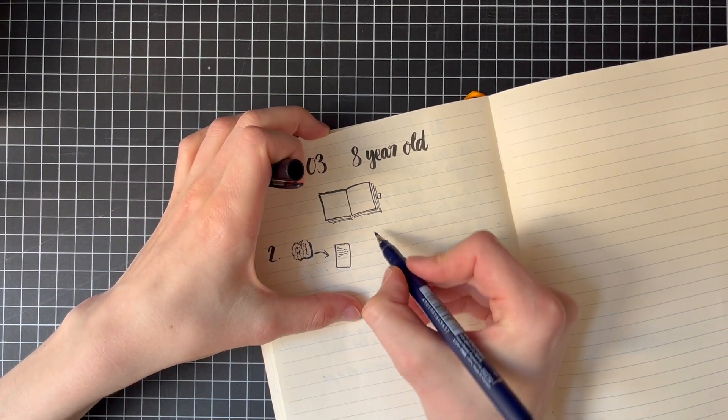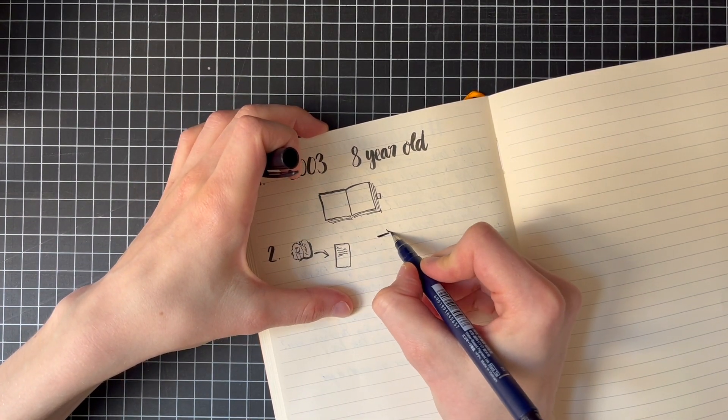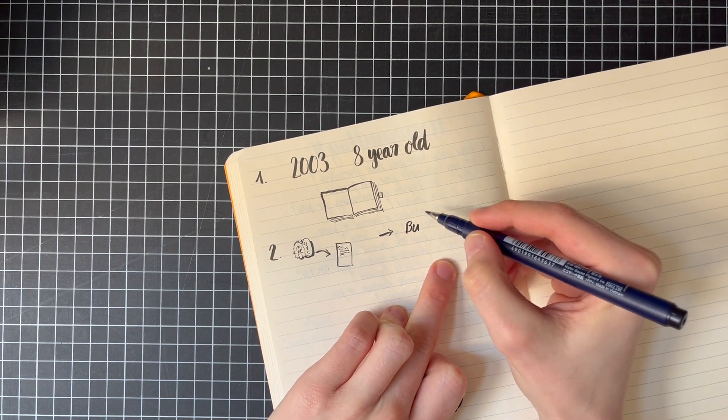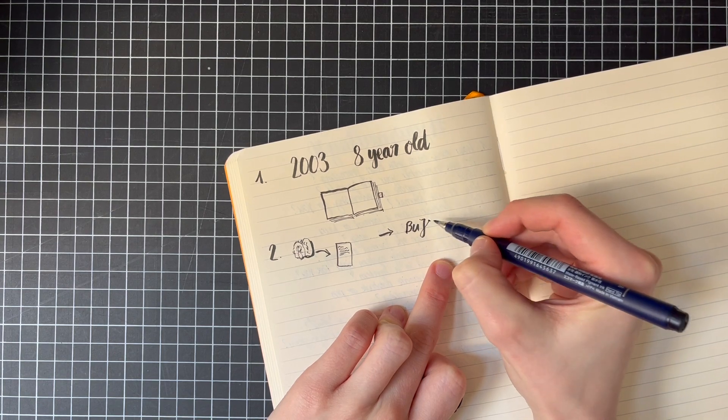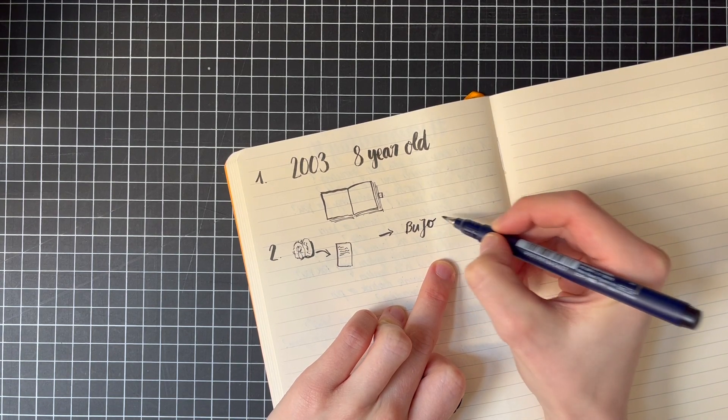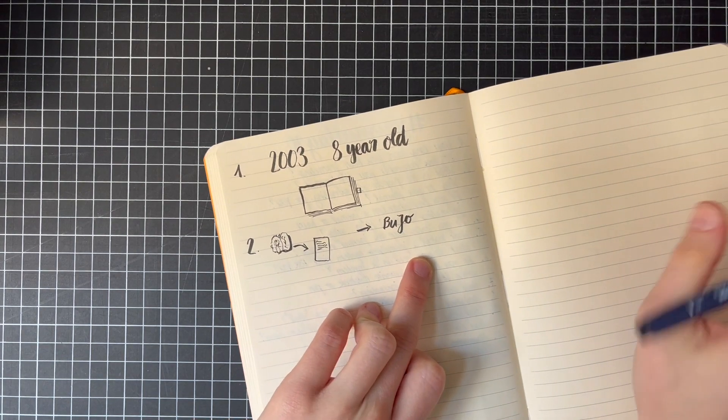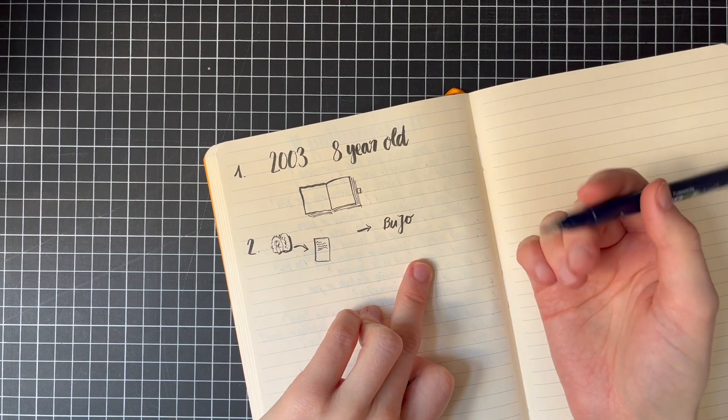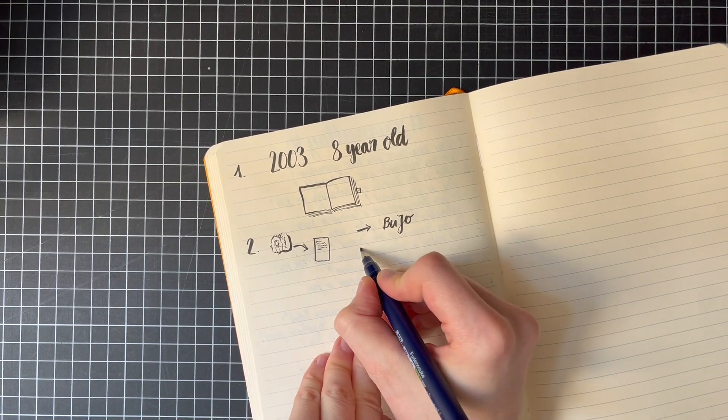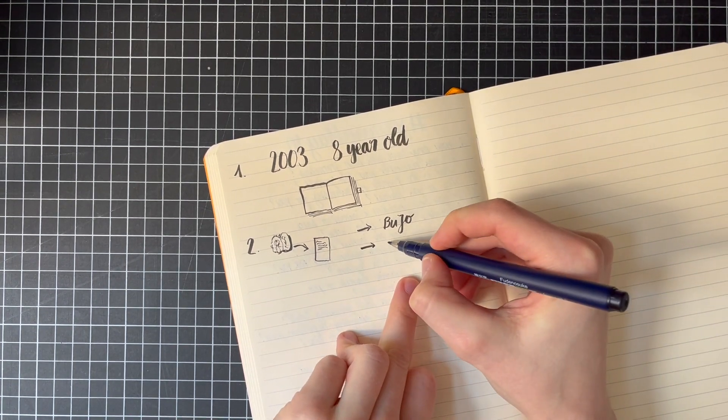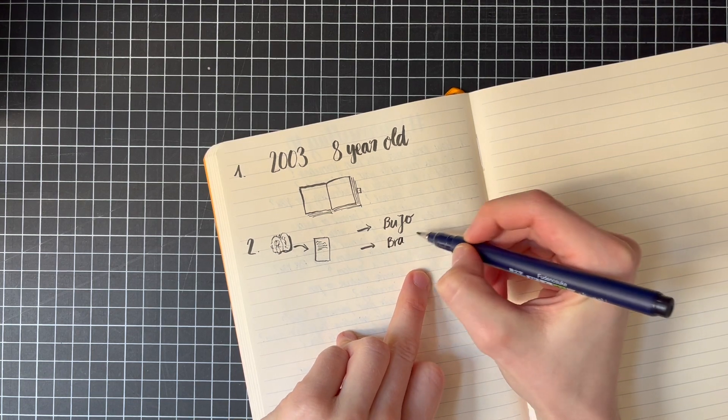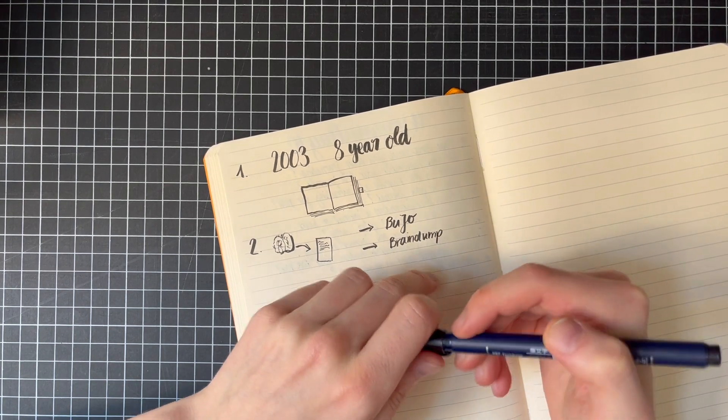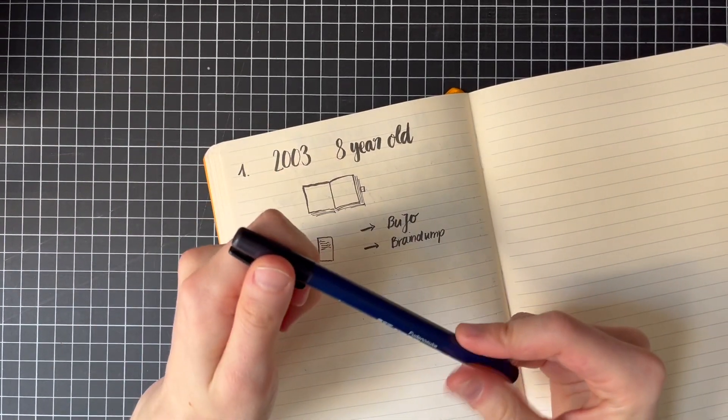And what I'm using for this is first, my bullet journal. You can call it a journal if you want to. For many, it's a planner. For me, it's a way to get my thoughts out of my brain so that my brain isn't as cluttered anymore. And the same goes with my brain dump journal. So I am using actually two different journals right now.